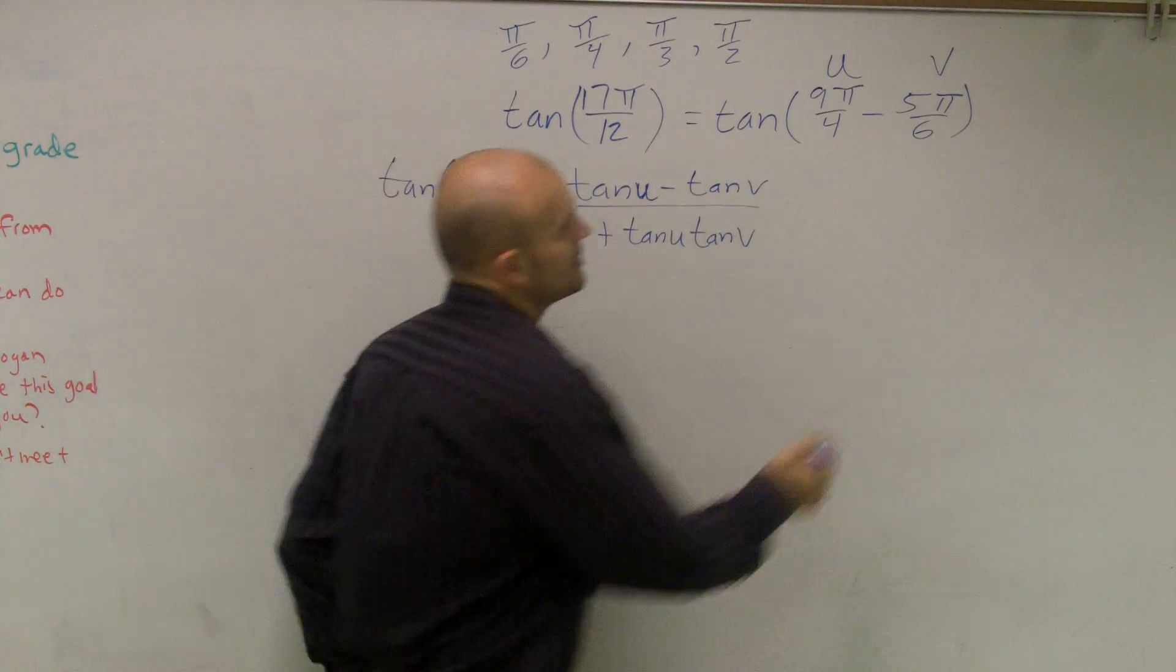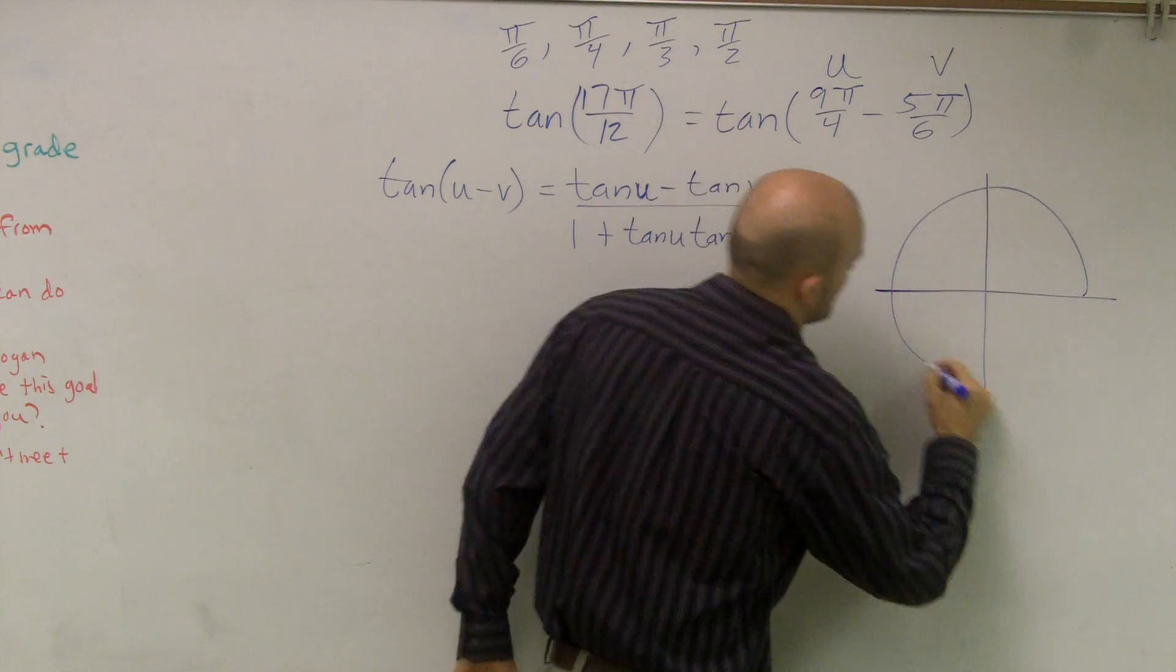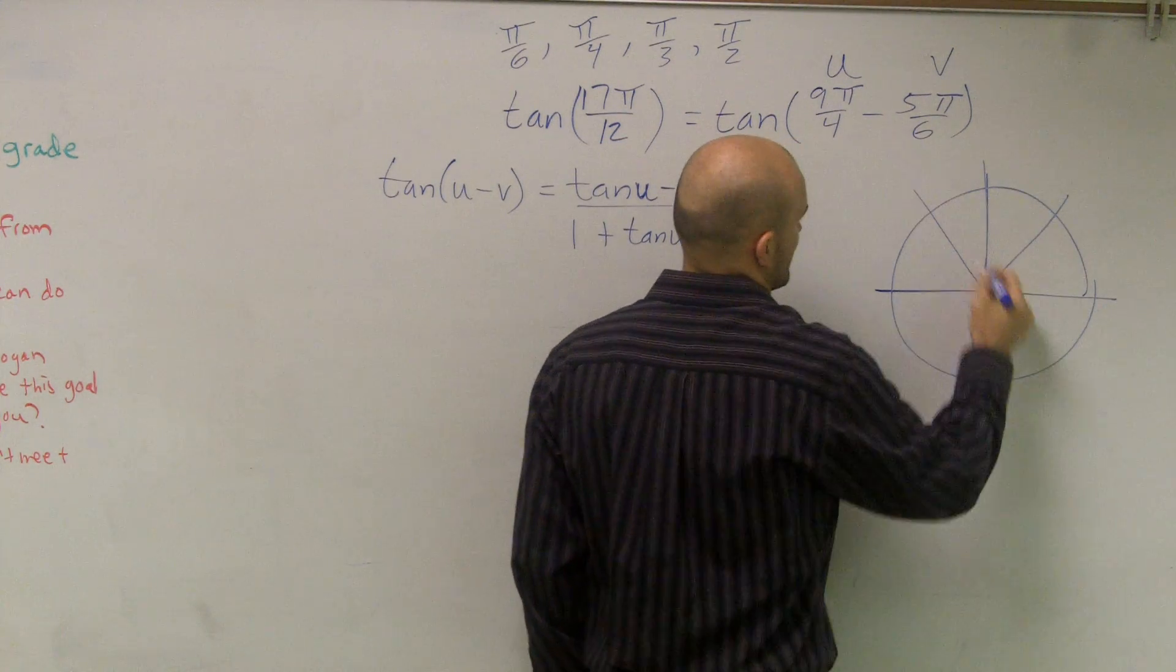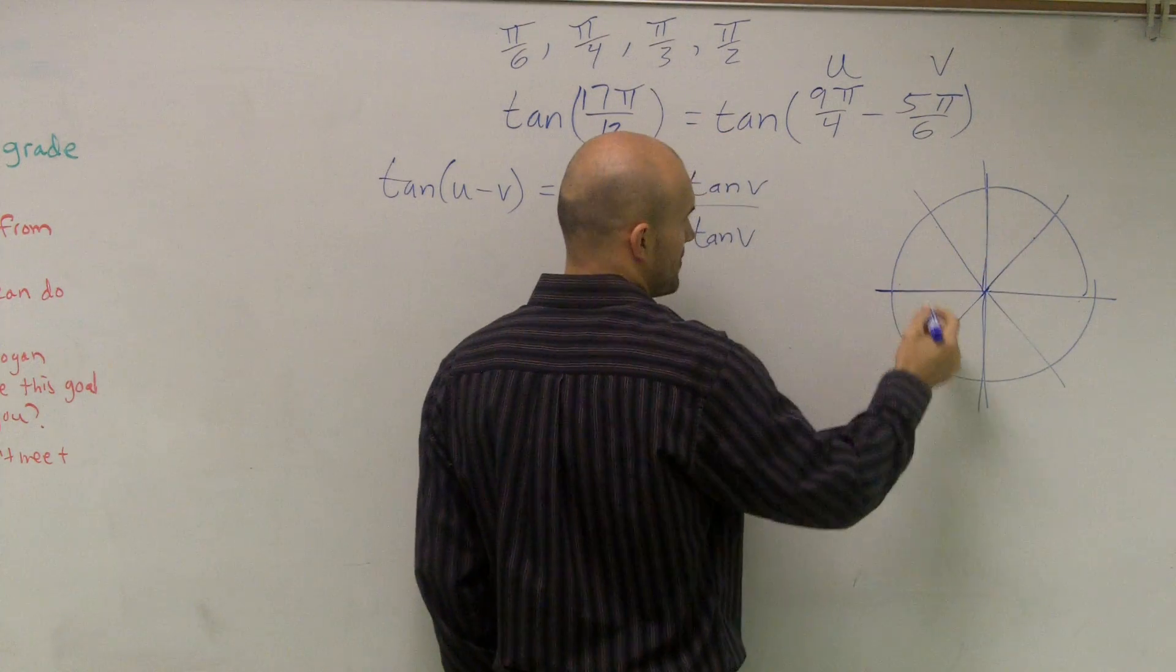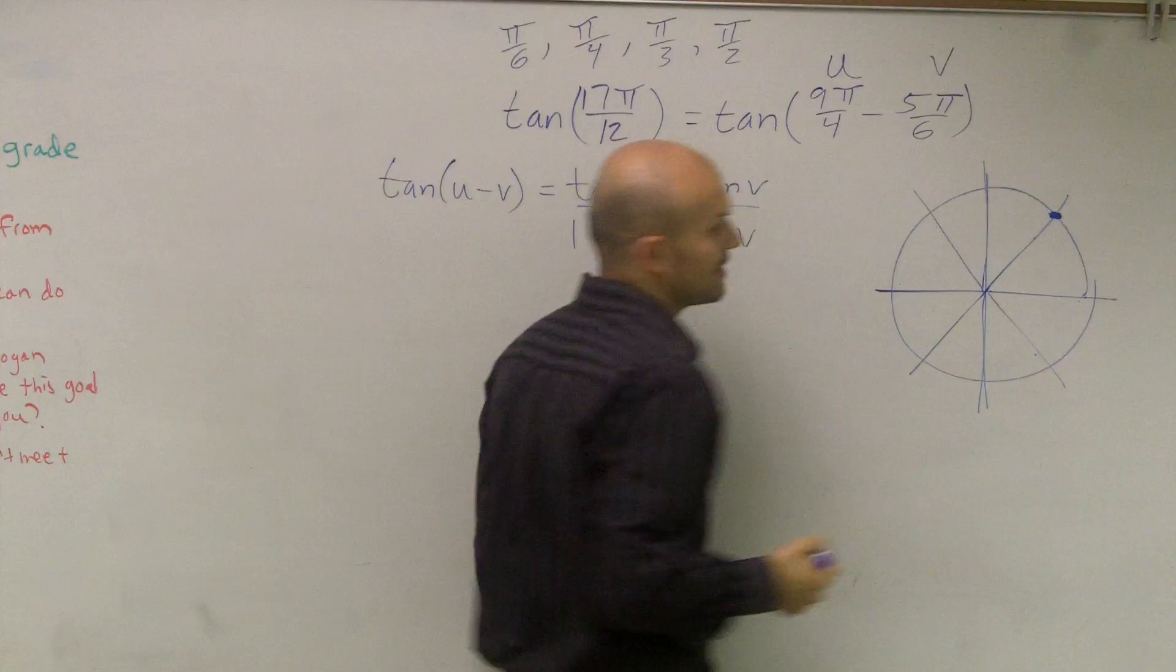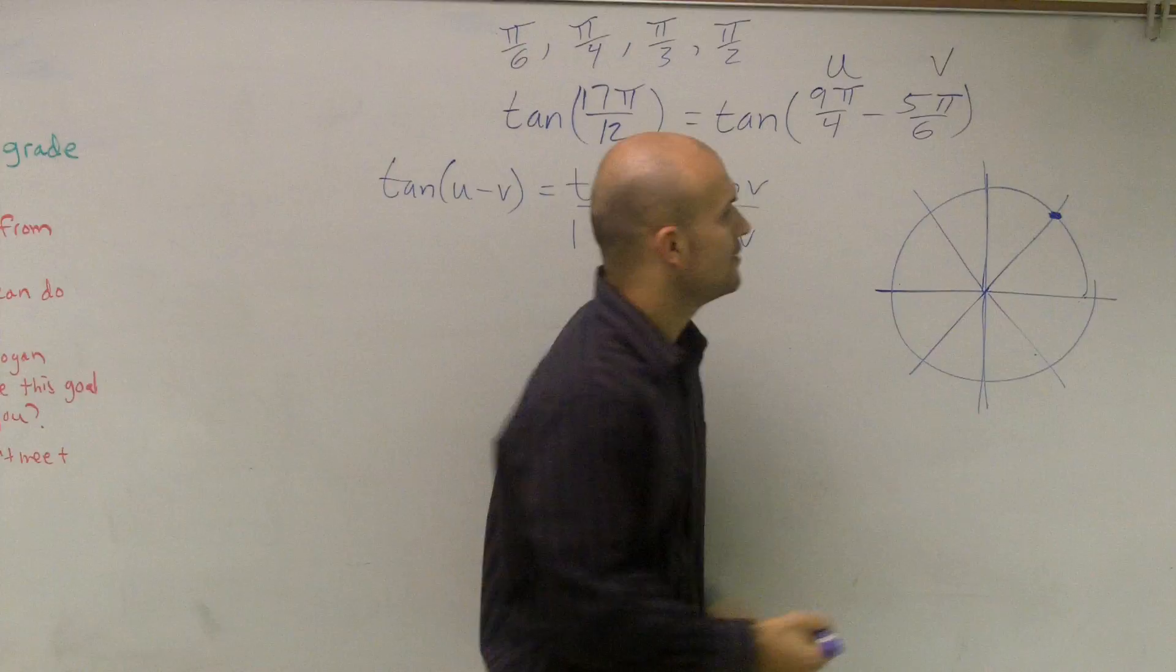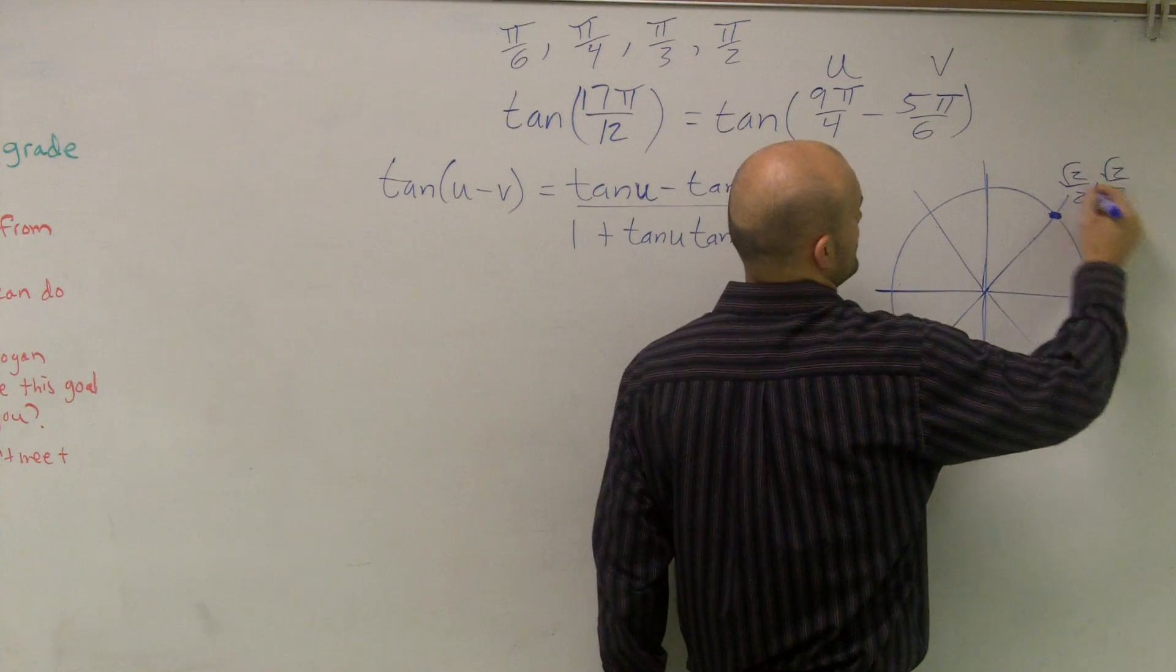So all I need to do is determine where in my unit circle is 9π over 4. So remember, we can break this down, 1π, 2π, 3π, 4π, 5π, 6π, 7π, 8π, 9π, right? So you can just always think about it as 2π over 4. So this coordinate right here is √2 over 2 comma √2 over 2.